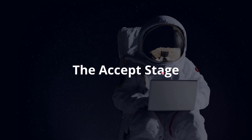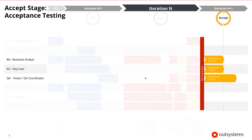Which takes us to the accept stage. In the accept stage, the tester focuses on coordinating the user acceptance testing and reports the quality status — like the number of tests executed, how many passed or failed, and the types and severity of the errors that were encountered. That completes the lifecycle for a set of user stories across the three stages.